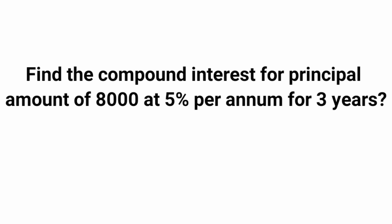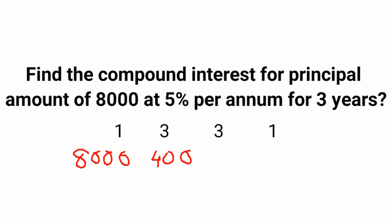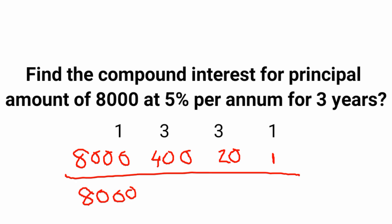Find the compound interest for a principal amount of 8000 rupees at 5% per annum for 3 years. The first step is to take the third row from Pascal's triangle: 1, 3, 3, 1. Below 1 write the principal amount 8000. Below 3, take 5% of 8000, which is 400. Again take 5% of 400 and write it in the third column — you get 20. In the fourth column, take 5% of 20, giving 1. Then multiply: first column 1 into 8000 gives 8000; second column 3 into 400 gives 1200.